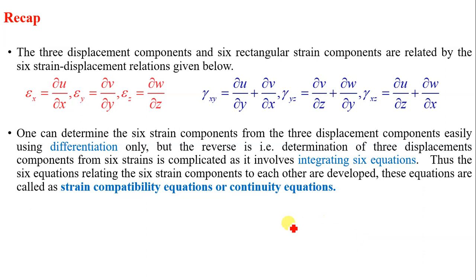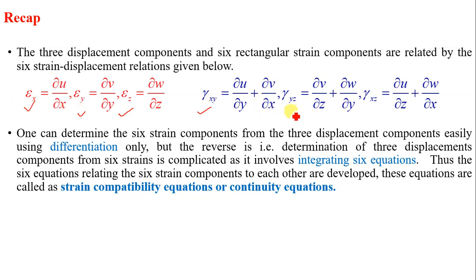To recap: we have 3 displacement components and 6 rectangular strain components, related by 6 strain-displacement equations — 3 for linear strains and 3 for shear strains. These 6 equations are called strain compatibility equations or continuity equations. Thank you.